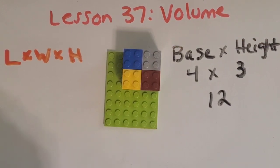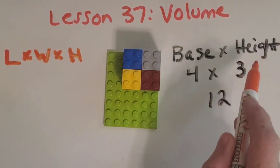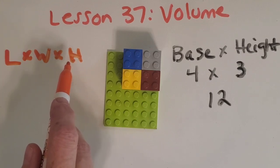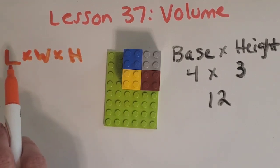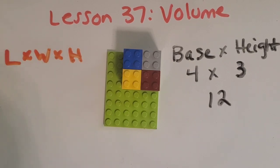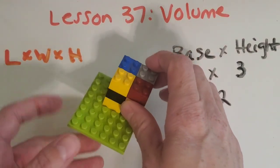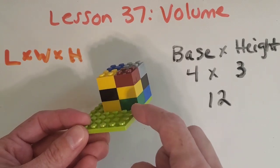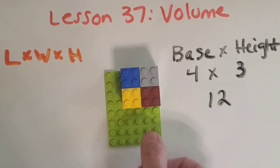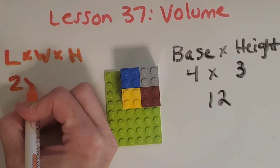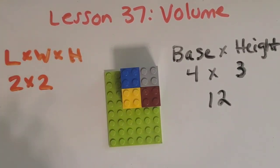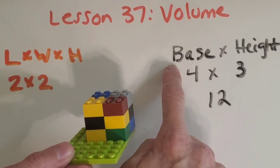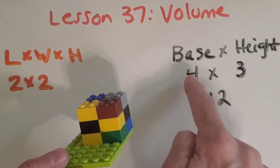I've got another strategy for you. This formula, instead of base times height, is length times width times height, and I'll show you how they're connected. You're used to area, which is length times width, and so that's really what you're starting with — you're thinking about the bottom layer. So length times width is two times two, which equals four. And what did we say was our bottom layer or base? Four. So this is kind of like just a little shortcut.